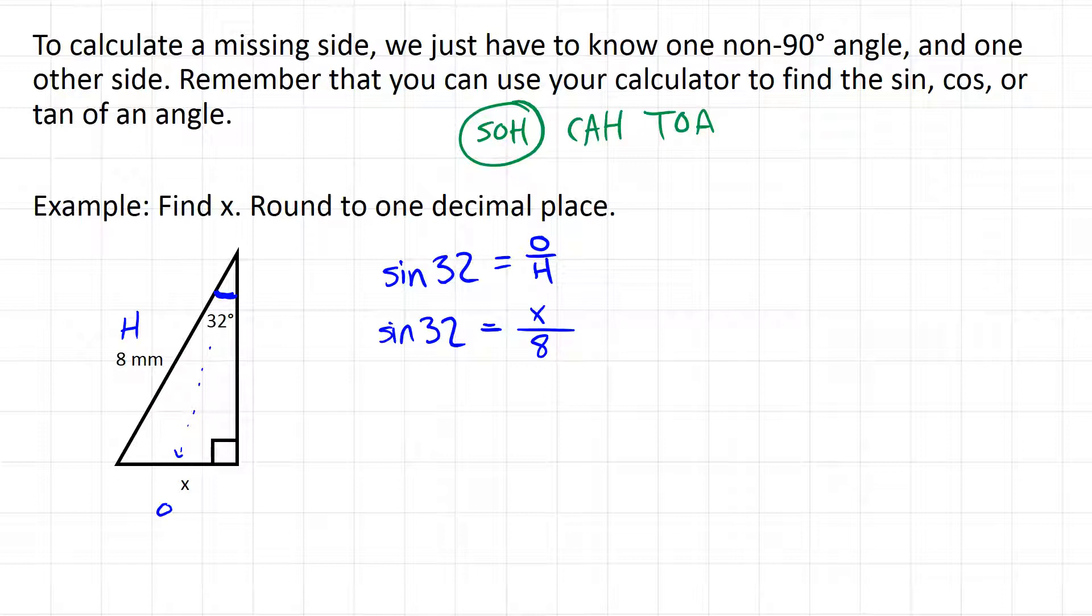And here's where we're going to have to do a little bit of algebra. We want to get x left all by itself, so we're going to have to get rid of the 8 on the right hand side. And in order to do that, we're going to have to multiply by 8. Because 8 is in the bottom of a fraction, we'll multiply by 8 on each side of the equation. Whatever you do to one side, you do to the other. And what that's going to do is it's going to cancel the 8's on the right hand side. And on the left hand side, we're just going to have 8 times sine of 32. Now sine of 32 is a decimal value that we can get from our calculator just by typing in sine 32. If I do that, I get 0.52992.